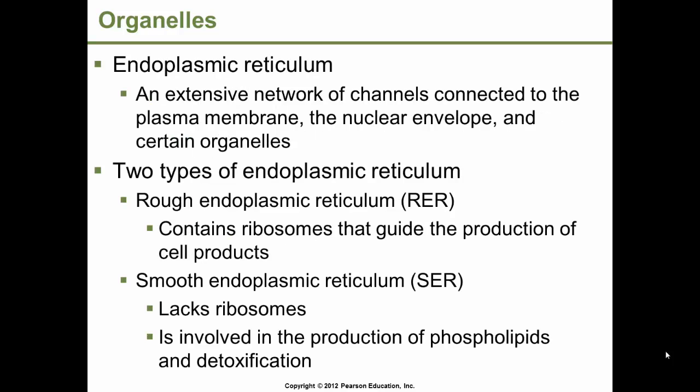The endoplasmic reticulum is an extensive network of channels connected to the plasma membrane, the nuclear envelope, and certain organelles — it surrounds the nuclear membrane. There are basically two types of endoplasmic reticulum: rough endoplasmic reticulum and smooth endoplasmic reticulum. Rough endoplasmic reticulum is so named because it contains ribosomes, which are the organelles that produce cell products — proteins. The smooth endoplasmic reticulum lacks ribosomes and is involved in the production of phospholipids and detoxification. Phospholipids are the primary component of the plasma membrane. The smooth ER is going to be more numerous in organs such as the liver, wherein enzymes modify drugs to make them more water soluble and thus easier to eliminate from the body.